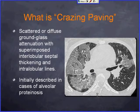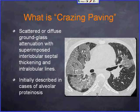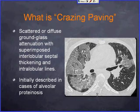The definition of crazy paving is scattered or diffuse ground glass attenuation with interlobular and intralobular septal thickening. As we can see here, you can appreciate the diffuse ground glass attenuation on the right and a scattered area on the left, with diffuse intralobular septal thickening and interlobular septal thickening.